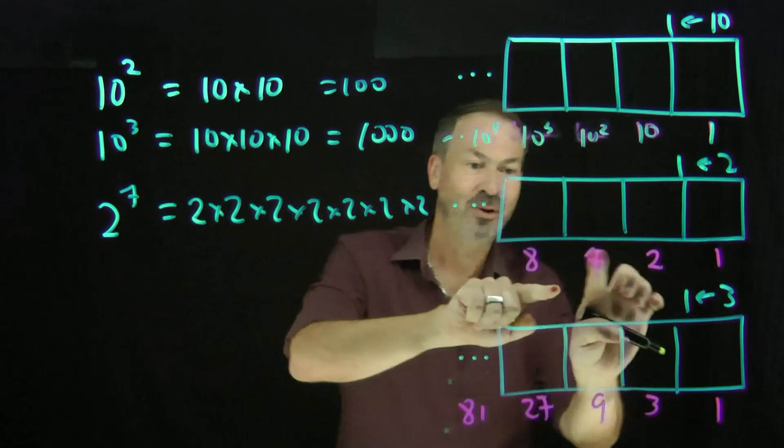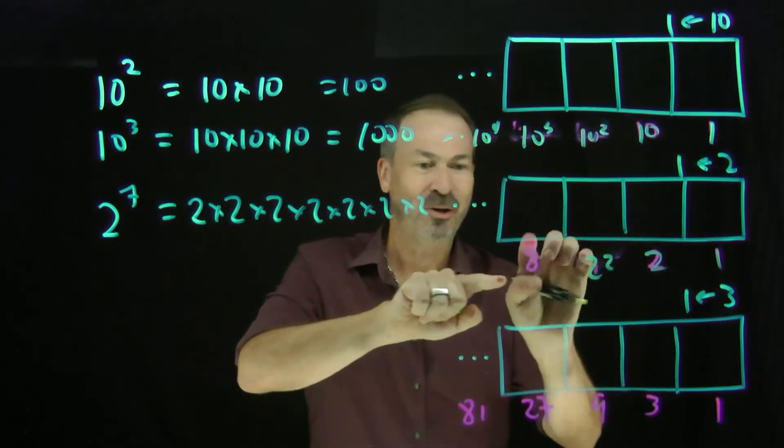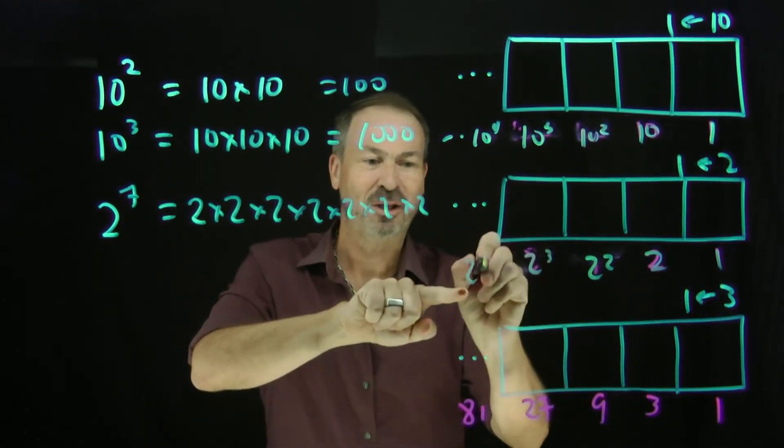Here's 1, 2. Here's 2 squared. So 1, 2, 2 squared. Here's 2 cubed. Here's 2 to the fourth and so on.